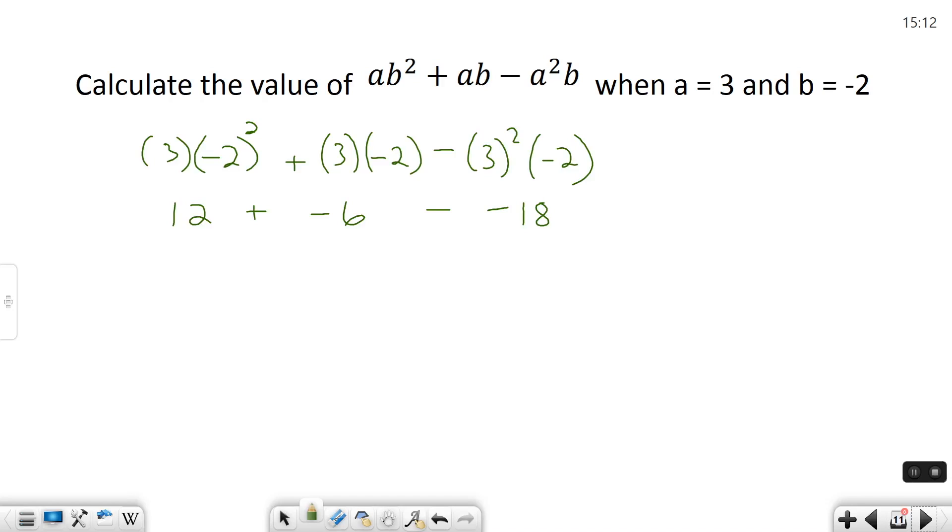Now what I have is what I call double signs. I need to take care of those and change them into just one sign. 12 plus negative 6 is the same thing as 12 minus 6, which is 6. Minus negative 18 is the same thing as plus positive 18. So I get 18, and then I could add those two up. 6 plus 18 is going to get me 24.